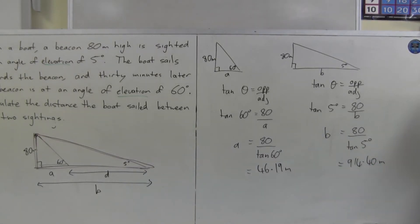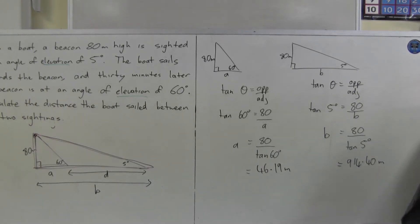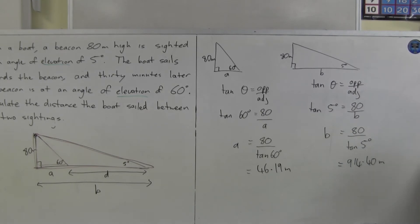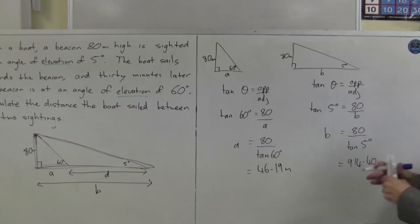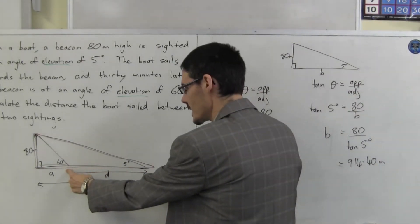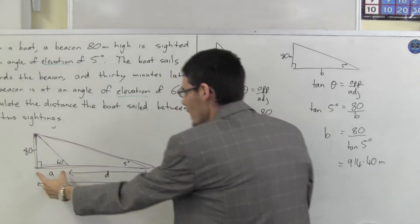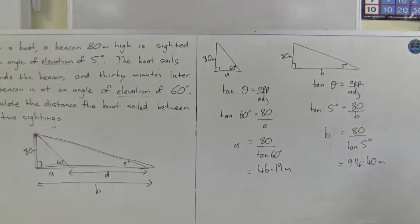Phew. That was a lot. Have I finished? Oh. No. No, I haven't. I have to find the distance the boat sailed. Back to this diagram, we have to find this distance D. Well, this distance D is just B minus A.